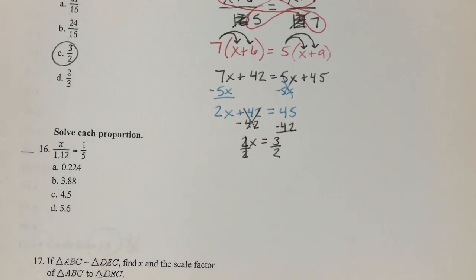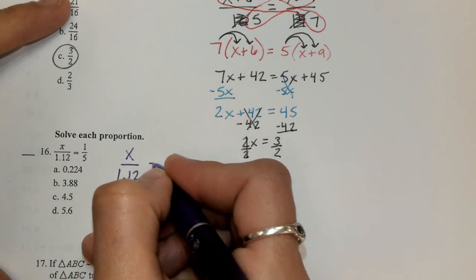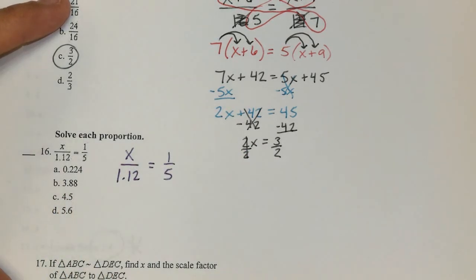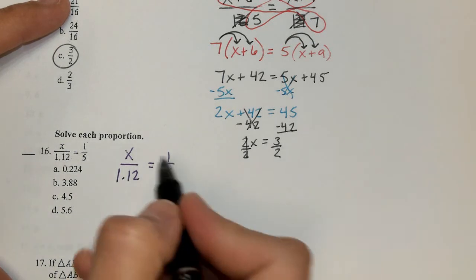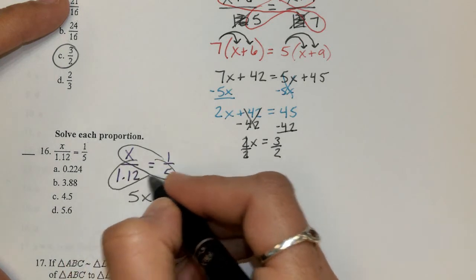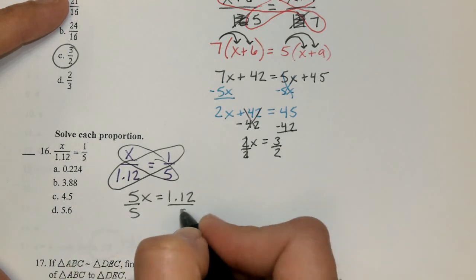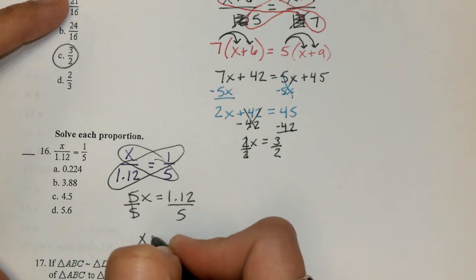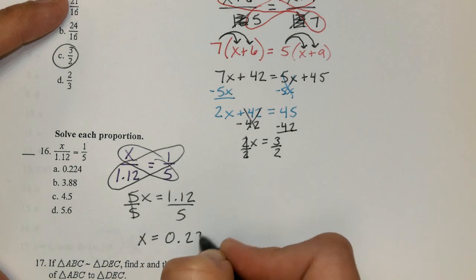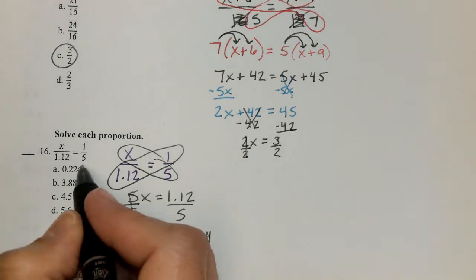16. Set up for us. Cross multiply, divide. That's all we got to do. Simple and sweet. I'm going to rewrite it so that I have my own work. I got X over 1.12 is equal to 1 over 5. I'm not worried about any simplification here. 5 times X gives me 5X equal to 1 and 12 hundredths times 1. Divide each side by that 5. X is then going to give us 224 thousandths, 0.224 right here.